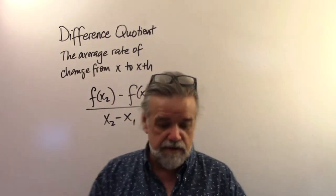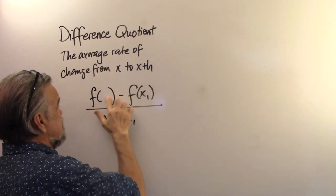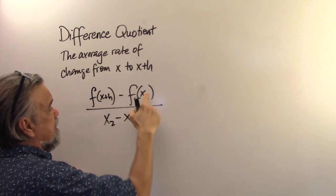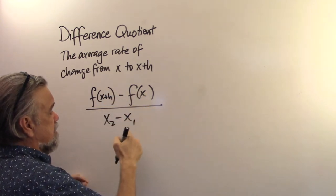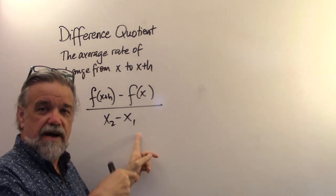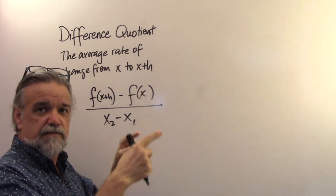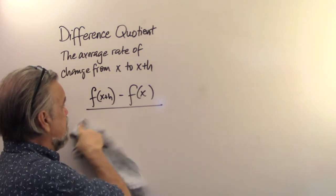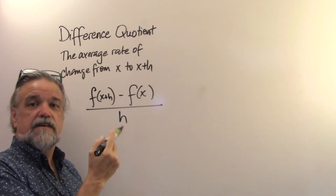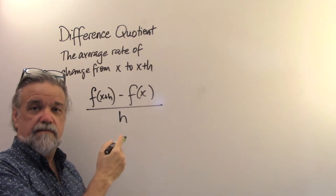So, what we're going to do is we're going to change this to f of x plus h. And this is just going to be f of x. And this will be x plus h minus x, which means you just end up with h. That is your difference quotient.